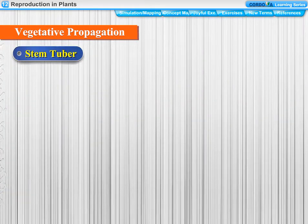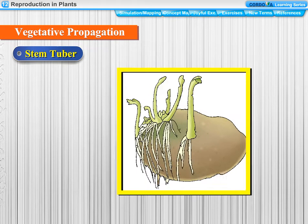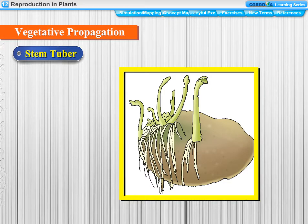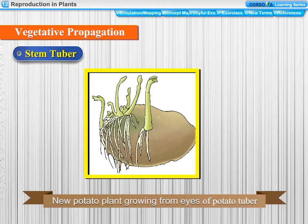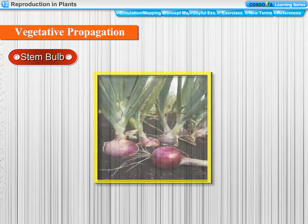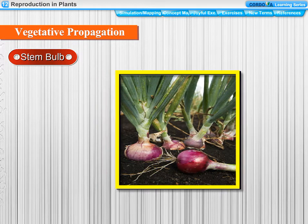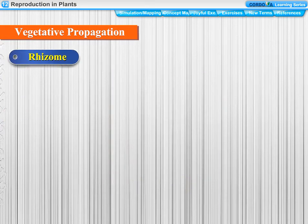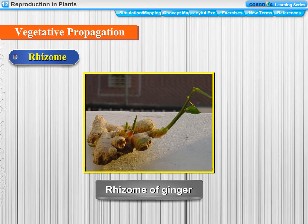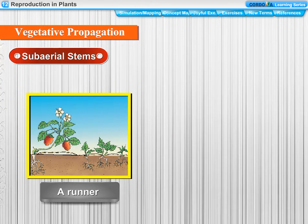Stem tuber: the underground stem of potato is called a stem tuber. A tuber is the swollen underground stem of a plant which has stored food; it has buds called eyes, and new potato plants grow from the eyes of the potato tuber. Bulbs: underground stems of onion, tulip, and lily are called bulbs — thick, short underground stems containing abundant reserve food. Rhizome: underground stems of ginger and turmeric are called rhizomes.